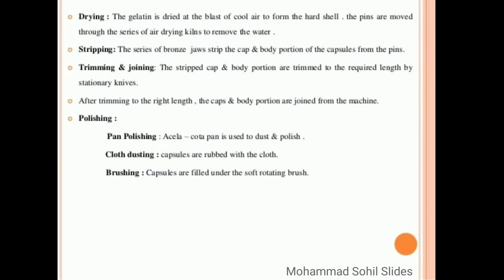Then second last is trimming and joining: the stripped cap and body portion are trimmed to the required length by stationary knives. After trimming to the right length, the caps and body portion are joined from the machine.